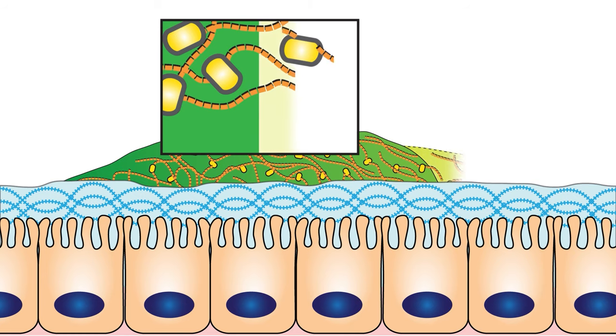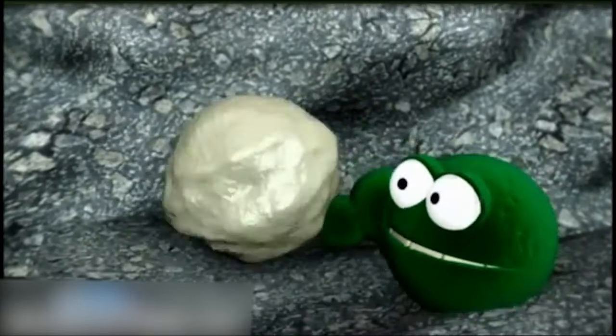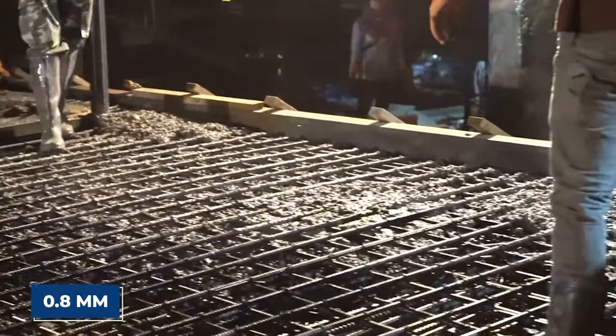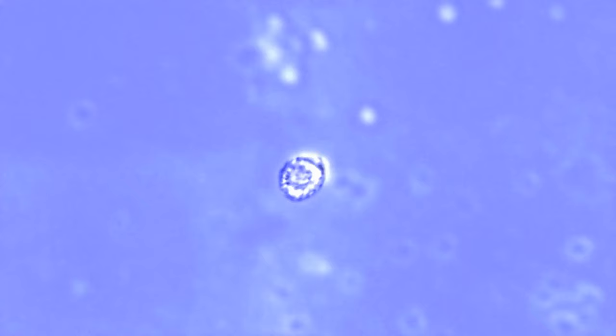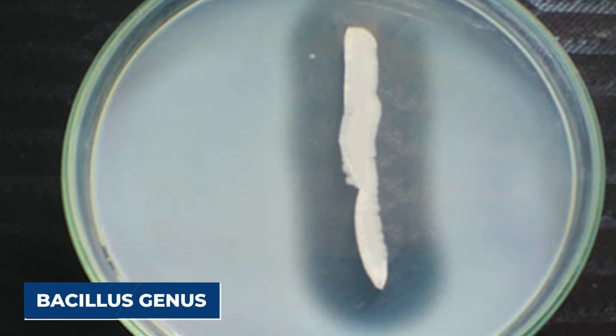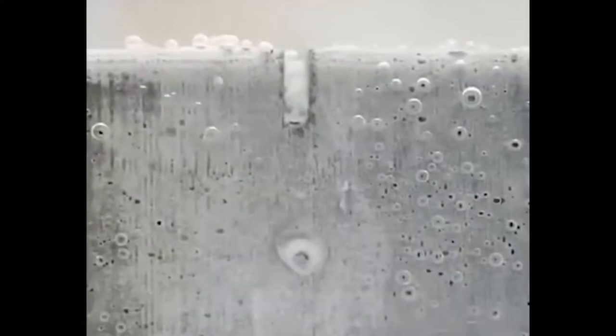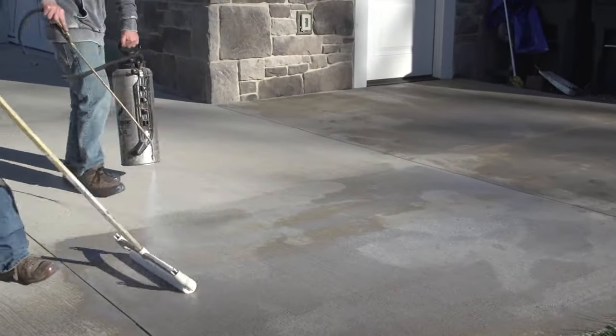Later, any cracks that form allow water to seep in, rupturing the capsules. This moisture triggers the bacteria to germinate. The bacteria then consume the released nutrients to produce limestone, which fills in cracks and holes up to 0.8 mm wide. Research identifies bacteria species in the alkali-generating bacillus genus as ideal self-healing concrete agents.